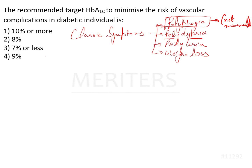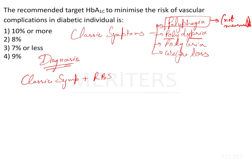Coming to the diagnosis of diabetes, we should understand how to make the diagnosis. If the patient is having the classic symptoms plus the random blood sugar is more than or equal to 200 mg%, then you can consider that the patient is diabetic.